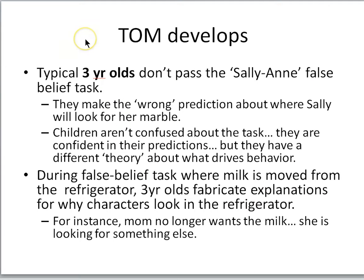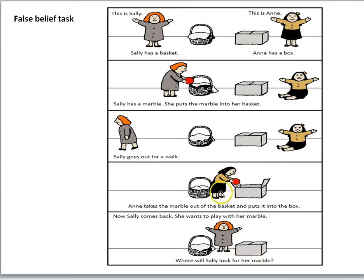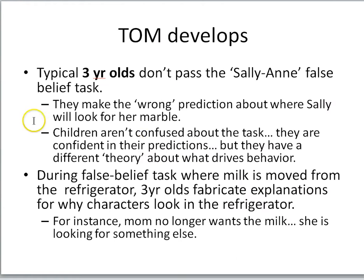The ability to think about other people's thoughts and beliefs has a developmental progression. Typical three-year-olds don't pass the Sally-Anne false belief task — they make the wrong prediction about where Sally will look. Three-year-olds think Sally will look in the box where the marble really is. They don't seem to understand that she has a false belief that will be influencing her behavior. It's not that children are confused — they're very confident in their predictions, just not the ones adults would make.